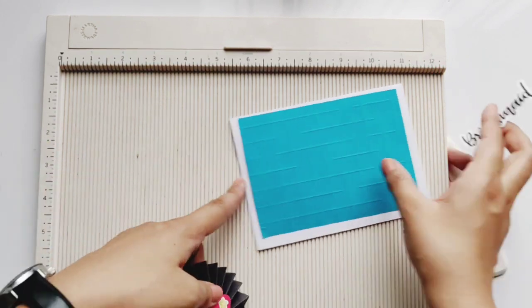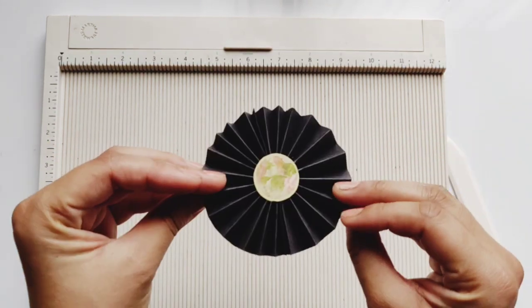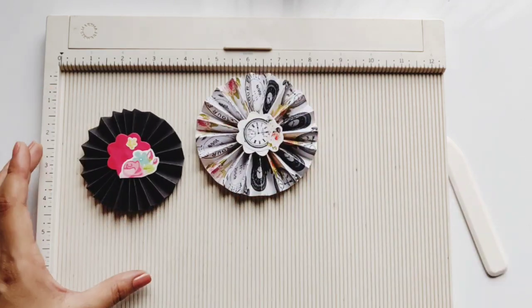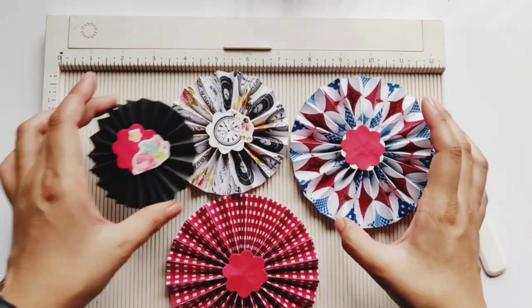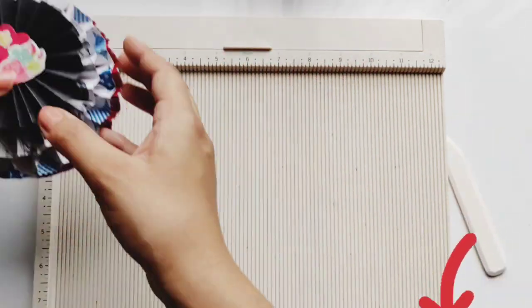The third use for your scoring board is using it to make rosettes. I have shared the video of how to make rosettes earlier on my YouTube channel. So you can go and check it out. I will add the link in the description.